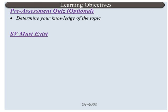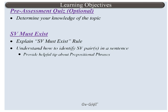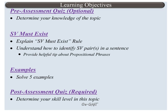Then we will understand the subject-verb must exist rule, following which you will learn how to identify subject-verb pairs in a sentence. Throughout this lesson, we will look at five different example sentences. At the end of the concept, you will take the post-assessment quiz to test your skill level. So let's get started.